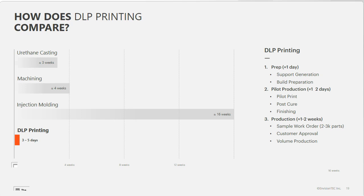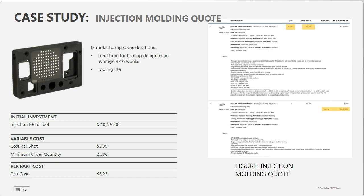Once you have your finalized design, you're able to start production right on the same machine — which is a great benefit when you can prototype and produce production samples on the same machine. Not only is there a time benefit, there's also a cost benefit when using DLP and specifically the Extreme 8K. I want to go through this cost model where we imagine a small business that has designed a simple electronics housing with slots, counterbores, and a vent.